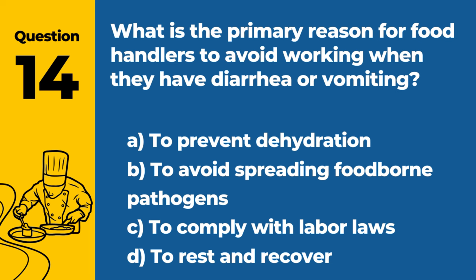Question 14: What is the primary reason for food handlers to avoid working when they have diarrhea or vomiting? A. To prevent dehydration. B. To avoid spreading foodborne pathogens. C. To comply with labor laws. D. To rest and recover. Answer: B. To avoid spreading foodborne pathogens. Food handlers should avoid working when they have diarrhea or vomiting to prevent the spread of foodborne pathogens to others through food contamination.